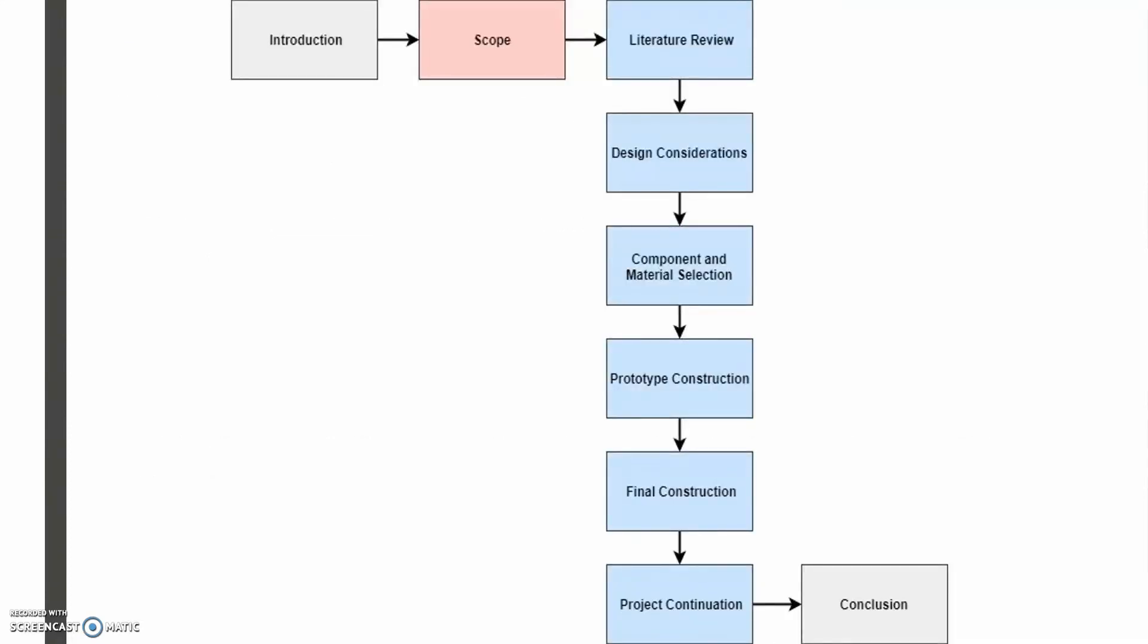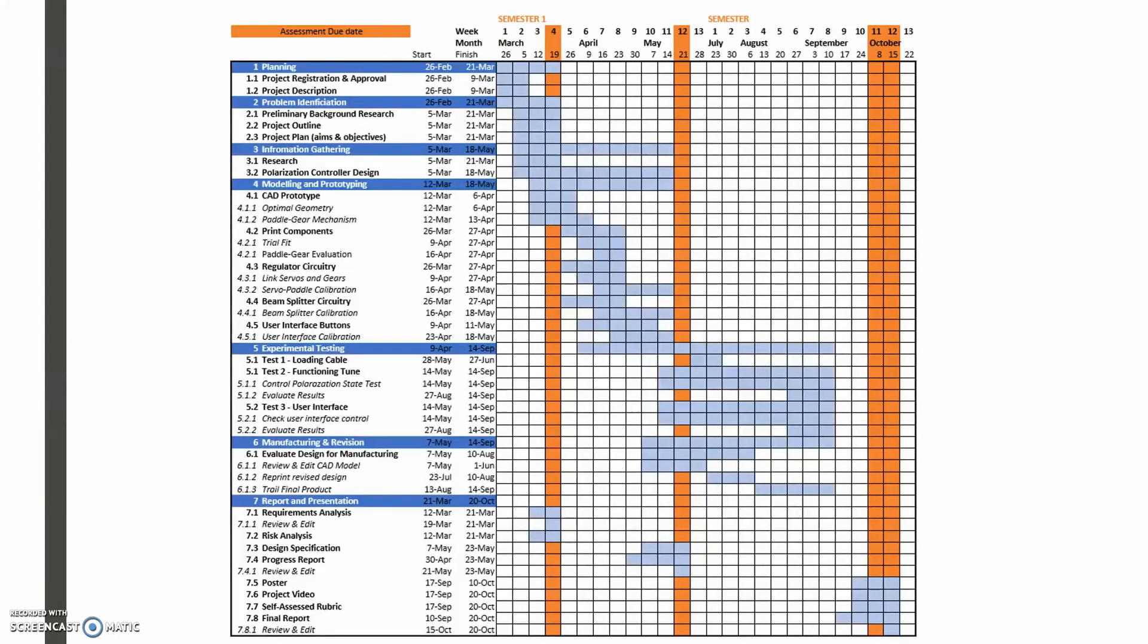To complete the project on time, I initially created a flow chart, which considered the design phases for the year. This was then made into a Gantt chart, which considered all the tasks required to complete the project on time. Each light blue square represents one week of the semester allocated to a specific task. These tasks have a start and finishing time and are the building blocks for completing each objective in the project.